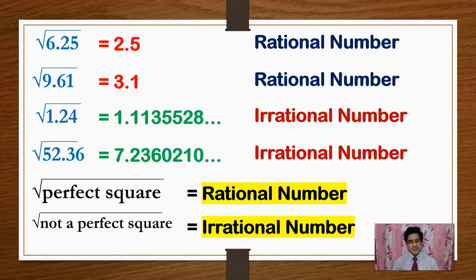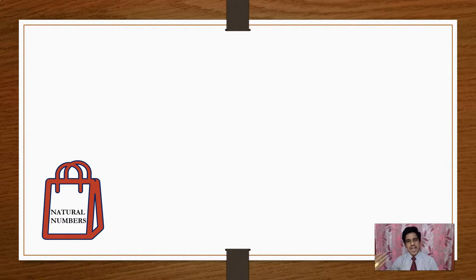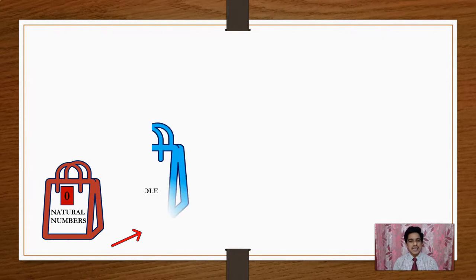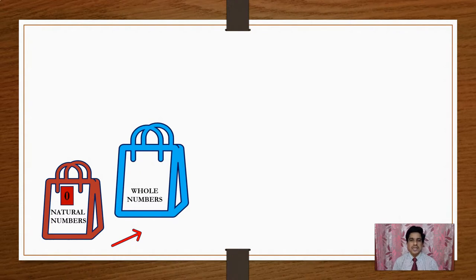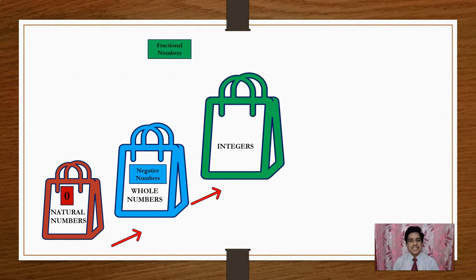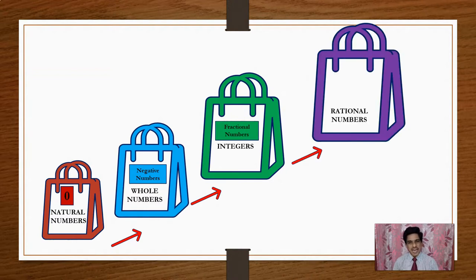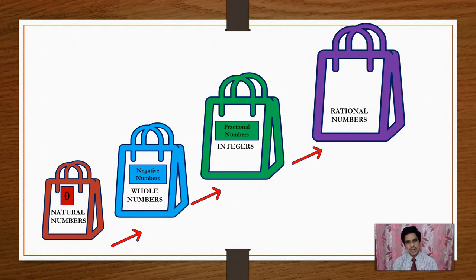Rational Numbers are the numbers which can be written in P by Q form. Now, for the number system starting from natural numbers: Natural Numbers are 1, 2, 3 and so on. If you include 0, you get Whole Numbers. If you include negative numbers like minus 1, minus 2, minus 3, you get Integers. If you then include fractional numbers like 1 by 2, minus 2 by 5, minus 3 by 7, you get Rational Numbers.